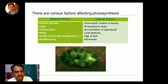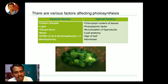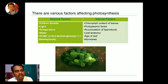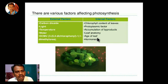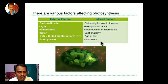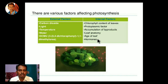The anatomical structure of the plant, such as leaf anatomy, is also a factor. Leaf age is also a factor related to chlorophyll pigment content. Hormones and minerals are also essential for photosynthesis, and we will discuss them in the next class. These hormones and minerals are factors for the photosynthetic process.